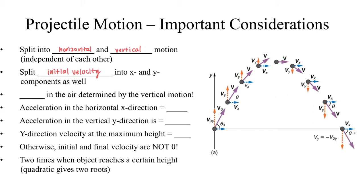It's also important to note that the time that that object is in the air is determined completely by the vertical motion. Gravity is accelerating that object towards the earth, and so it will be in the air for as long as the vertical motion allows. And this time is the same for both vertical and horizontal motion. The object's in the air just as long horizontally and vertically, so we can use time to connect the two directions.